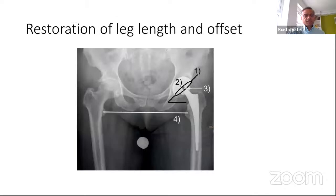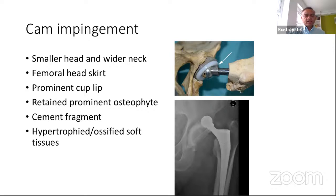Restoration of leg length and offset is very important. If you've shortened the leg, there is increased telescoping; if you tighten it too much, it can cause abductor pain and potential dislocation. Cam impingement factors include a smaller head-neck ratio, skirting on the femoral head, a prominent lip of the cup, and retained anterior osteophytes. Once you've implanted your trial or definitive cup, you need to remove anterior osteophytes, any cement in cemented cups, or any hypertrophic soft tissue.